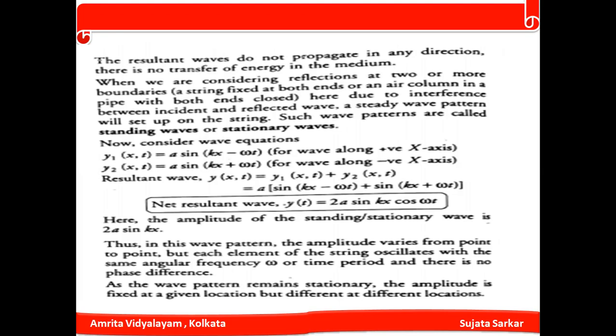The amplitude of the standing wave is 2A sin(kx), which varies from point to point. Each element of the string oscillates with the same angular frequency ω and the same time period. There is no phase difference between elements, the wave is stationary, and the amplitude is fixed at a given location but different at different locations.